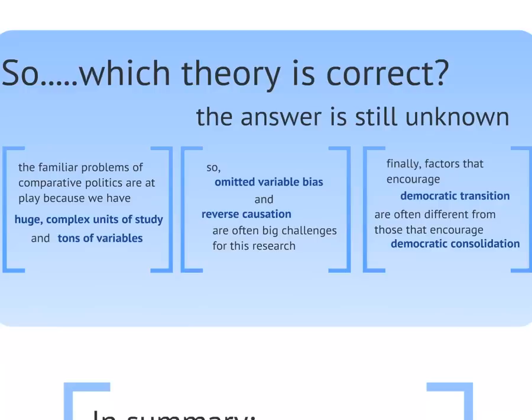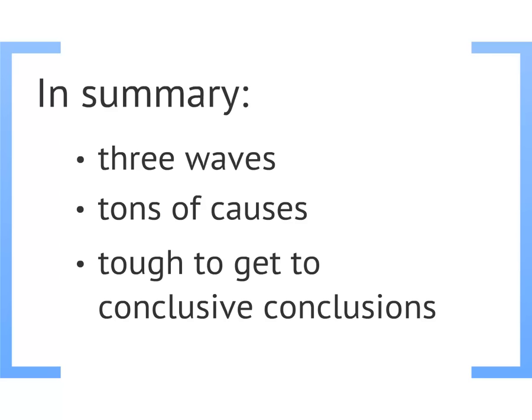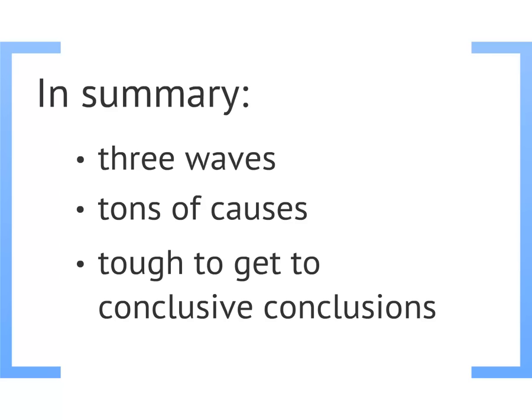So, in summary, the history of democratization seems to follow three waves. Because democratization is such an enormous, long, and complex process, there are many, many potential variables that can contribute to it. And because of this, we run into the typical problems with comparative politics and social science more generally, and we don't get many conclusive conclusions out of it, unfortunately. That's all for now — go off and enjoy your democracy.